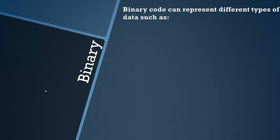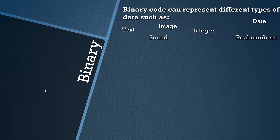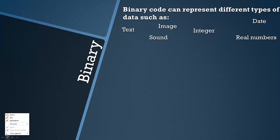Binary code can represent different types of data such as text, image, sound, integer, date, and real numbers. We know from the first video in the whole series an integer is a whole number and a real number is a decimal number. But like I said on the previous slide, binary code represents everything.